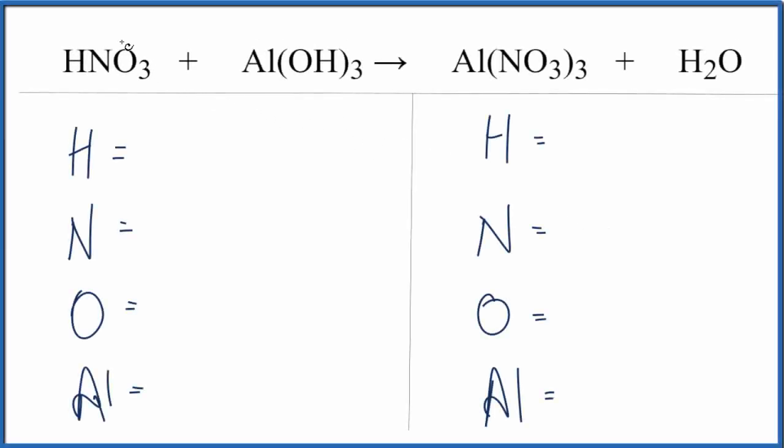Okay, let's balance this equation here. We have nitric acid, HNO3, plus Al(OH)3, which is aluminum hydroxide.